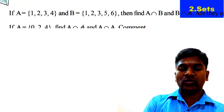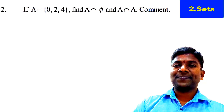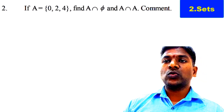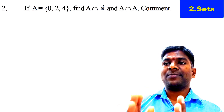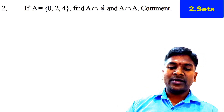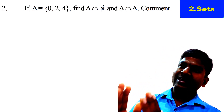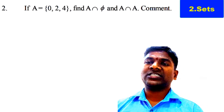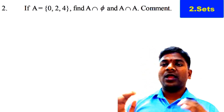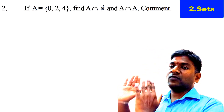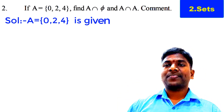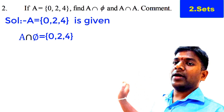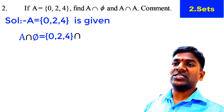Now let's solve the second question. Set A = {0, 2, 4} — these are the three elements of Set A — and we have to find A intersection ∅ and A intersection A, and comment on the answers. For A intersection ∅: the elements of A are {0, 2, 4}, and ∅ denotes the empty set — the curly brackets without any elements inside.